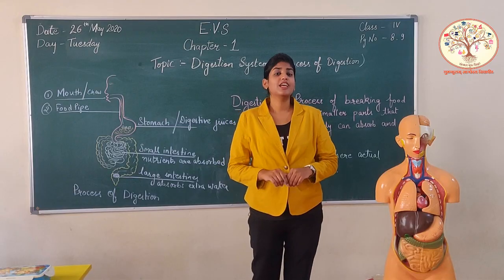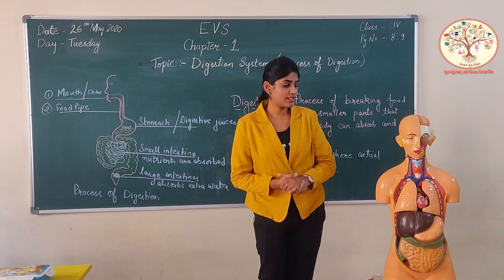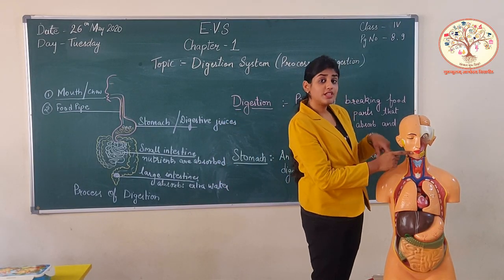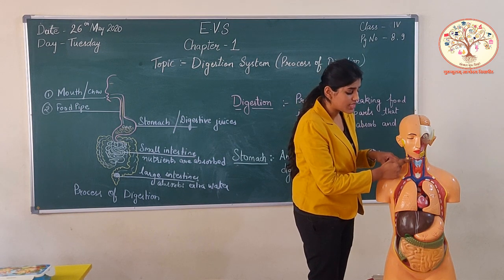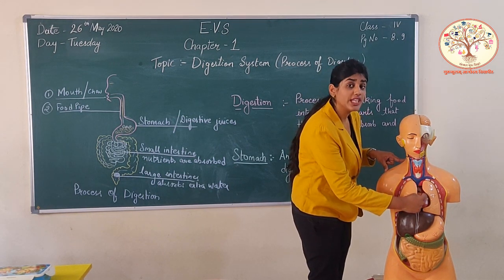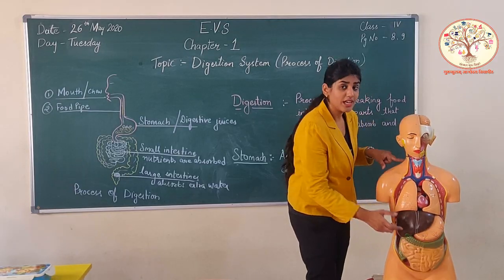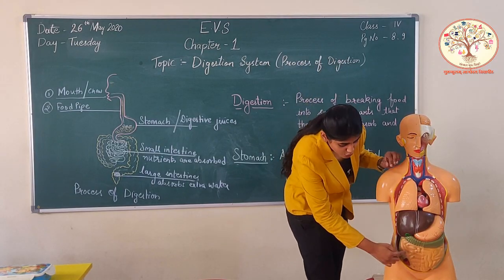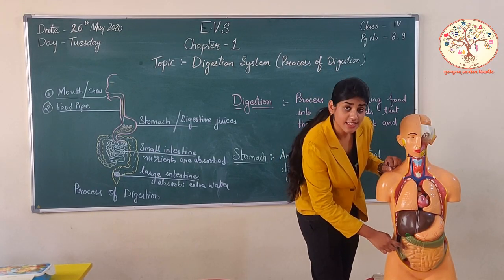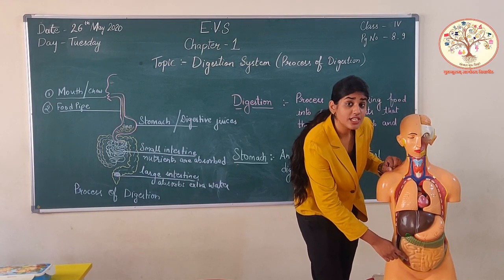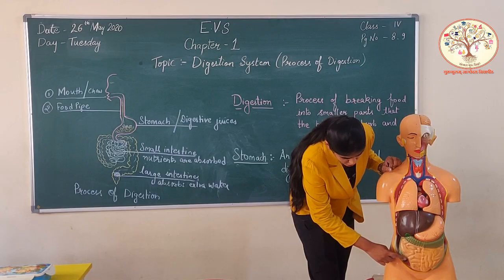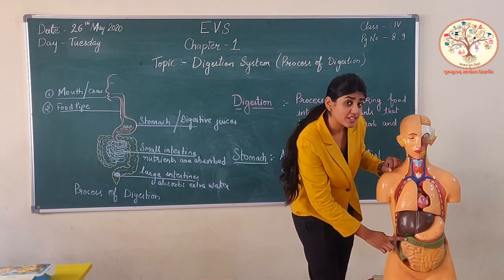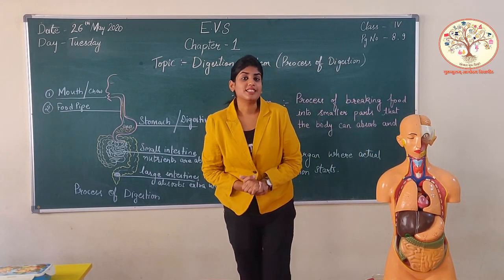Let's review what we have learned today. We take food first from our mouth, then it goes inside the stomach with the help of the food pipe. The stomach squeezes and relaxes so that food mixes properly, and it passes to the small intestine where nutrients are absorbed by the blood. Then the waste food is passed to the large intestine where extra water is absorbed, and the undigested food is moved out of our body.